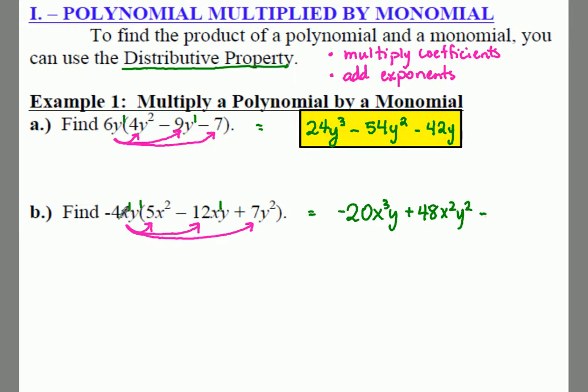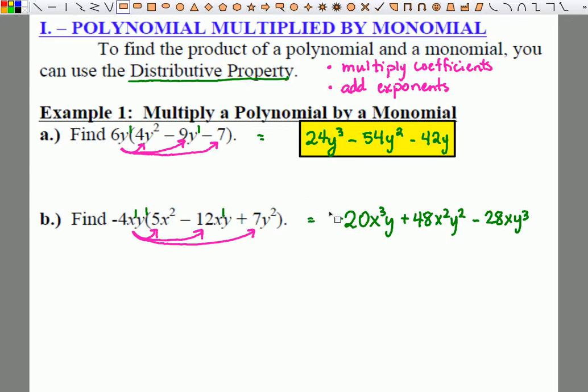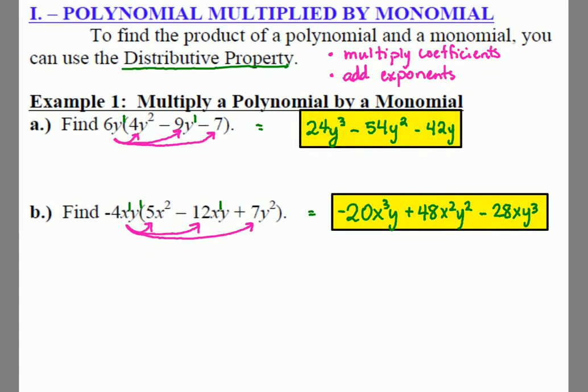And then finally at the end, negative 4 times 7 is going to give us negative 28. We don't have any x's to add, so we have just our x from the outside. Then we have a y to the first, y to the second gives us y cubed. That is how you multiply a monomial times a polynomial.